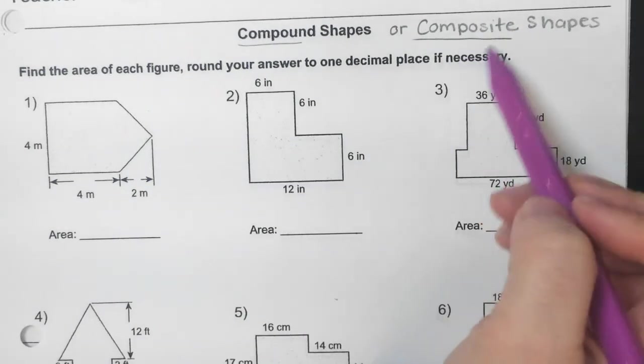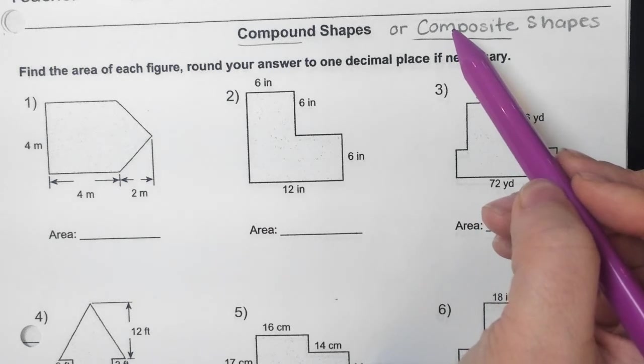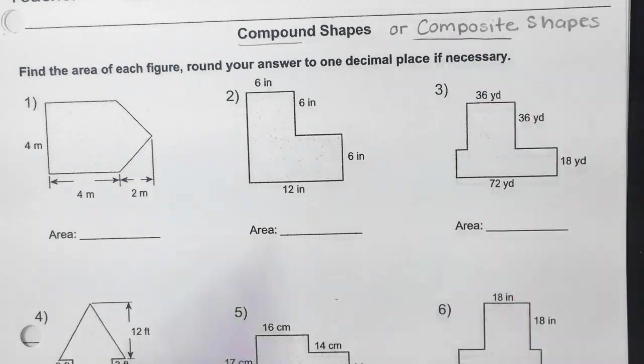Another place that we see the word composite is in math. We talk about a composite number. A composite number would be like the number 12. Why is 12 composite? Macy? Some number that you can multiply by 12. Yeah. So to get 12, I could do 2 times 6. That gives me 12. So two numbers make 12. I could also do 3 times 4. That makes 12. So a composite number is a number that could be made up by different numbers, right?